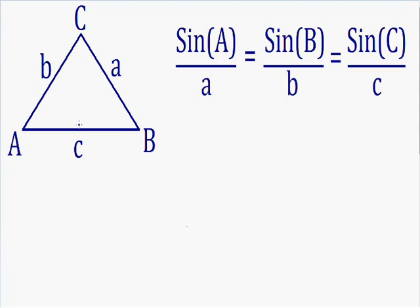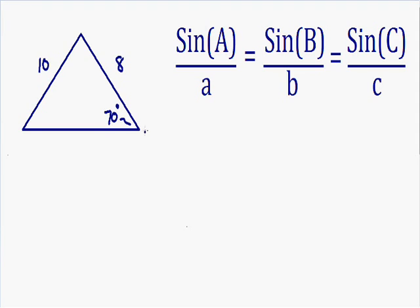Let's get started with an example. This angle right here is 70 degrees, and the side opposite that angle has a length of 10. This side over here has a length of 8, and we're going to solve this entire triangle. We'll say this angle is angle A, so the side opposite of angle A has to be side A.